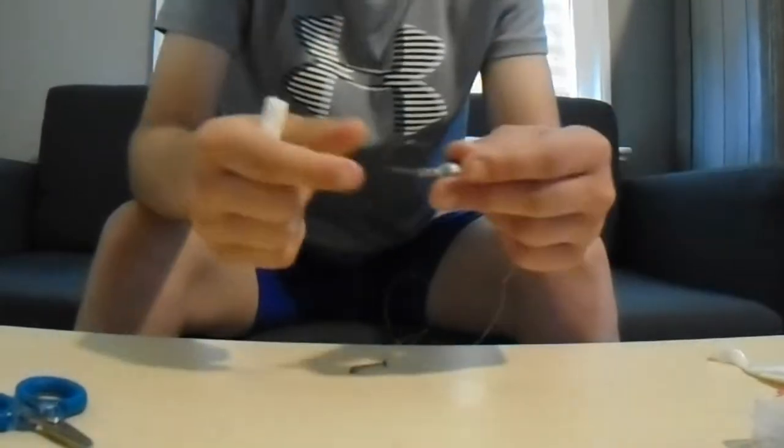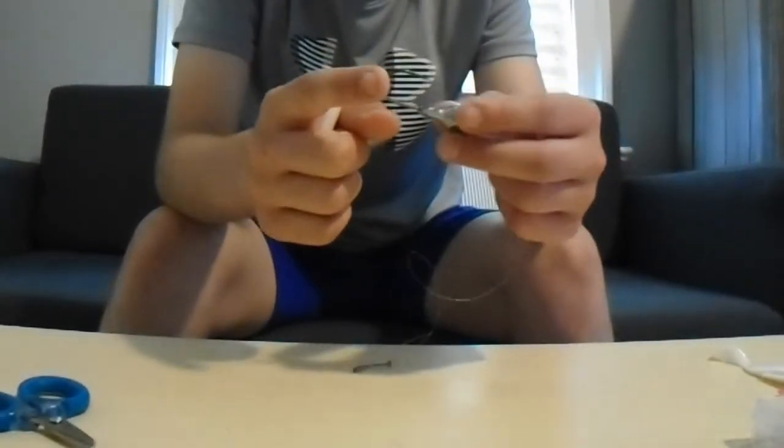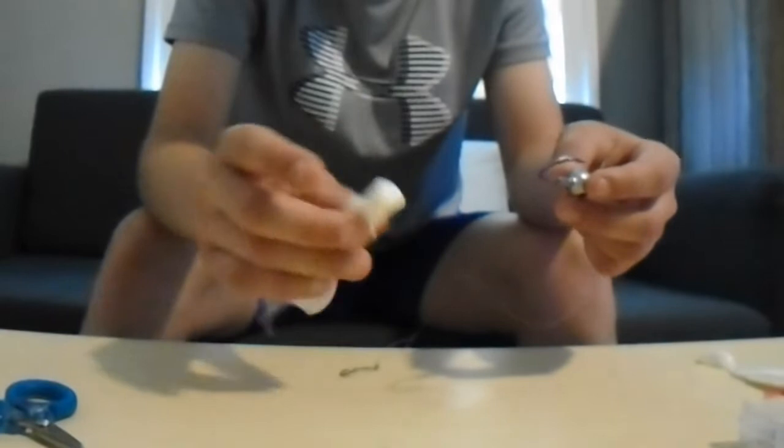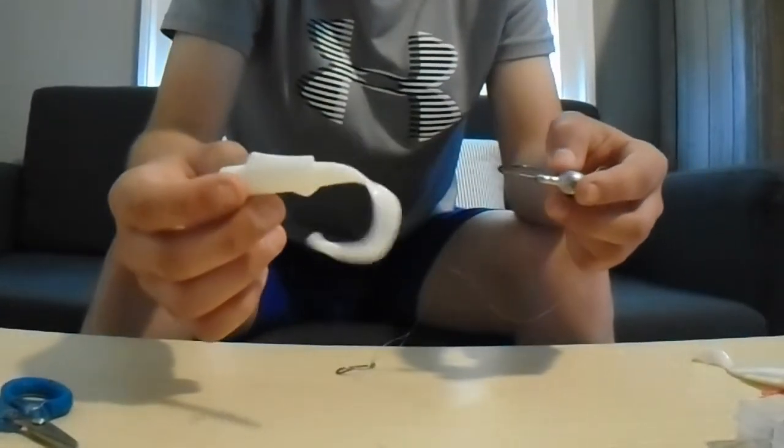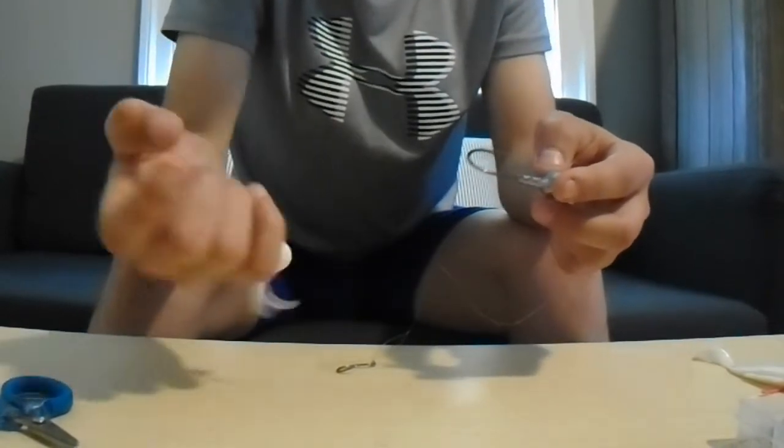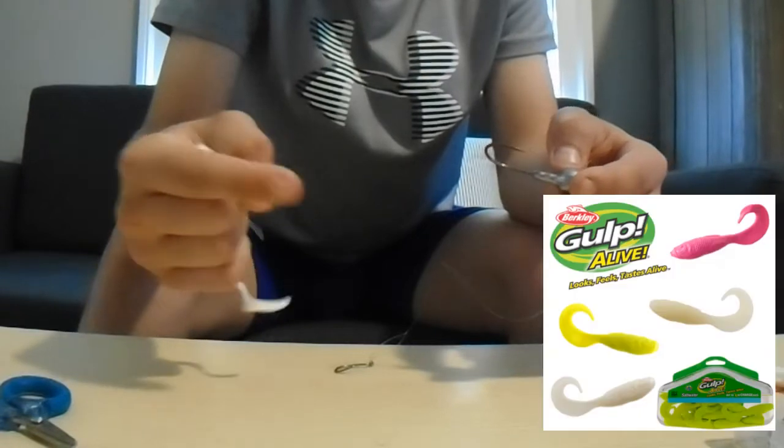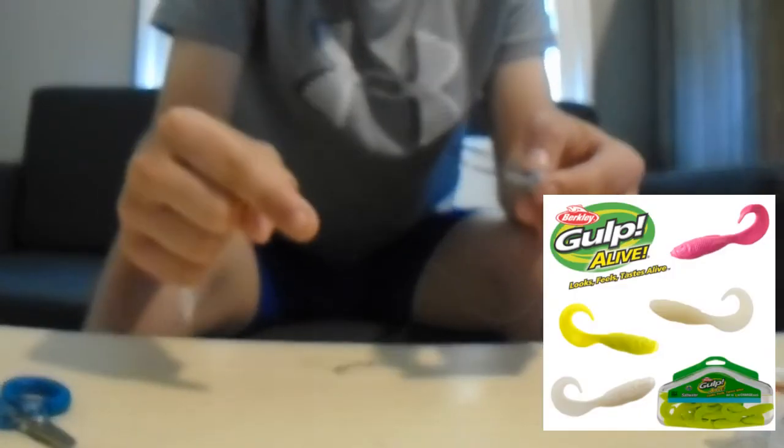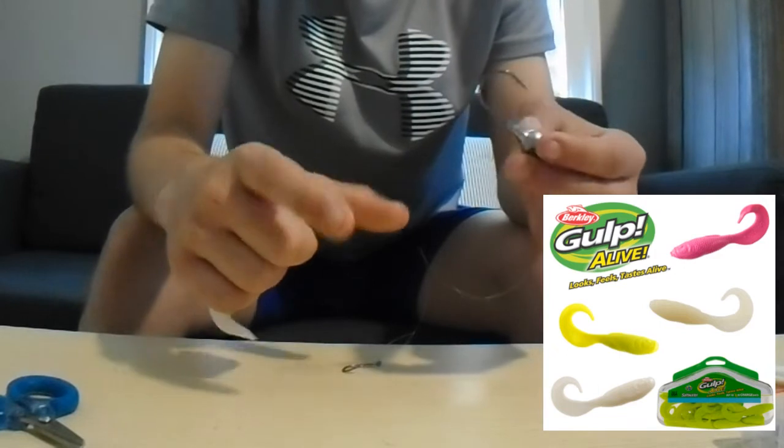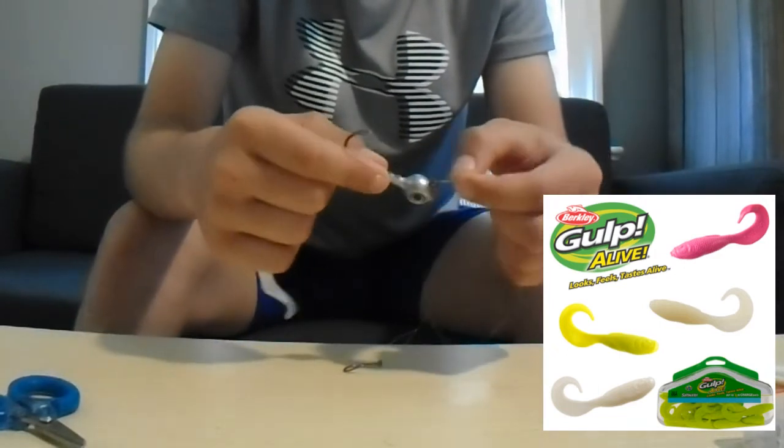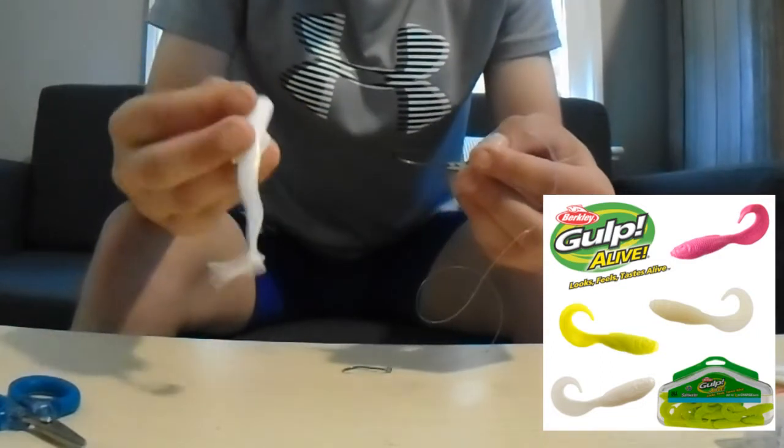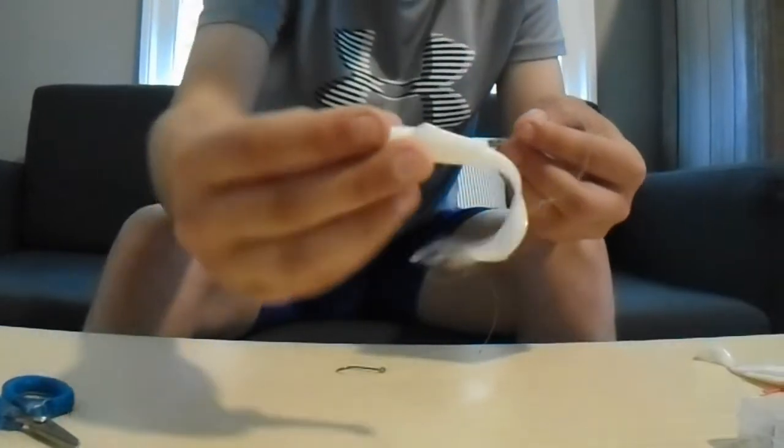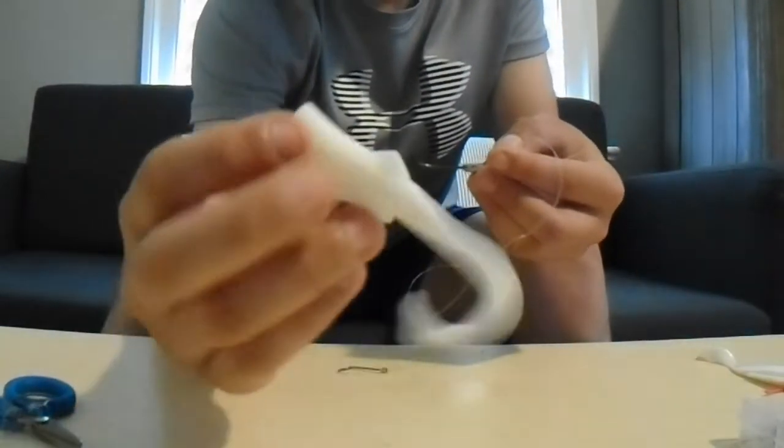And then for the trailer, what you're going to put on this hook, it's called Berkley Gulp. Two words to flounder fishing: Berkley Gulp. This is not Berkley Gulp, I don't have any with me right now, I'm going to use this. Here's a picture of Berkley Gulp on the screen right now. That's what it looks like. Go buy it. You can get them in big packs or little packs. Normally the bigger ones are about $25, a little bit pricey but 100% worth it.